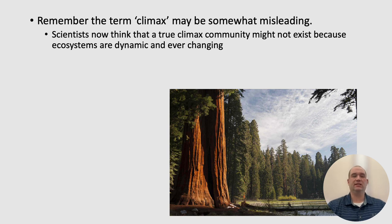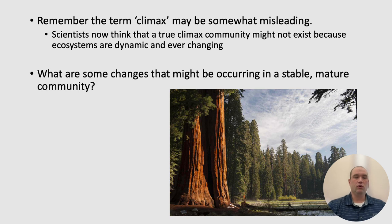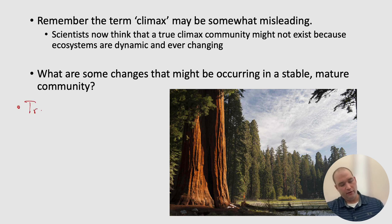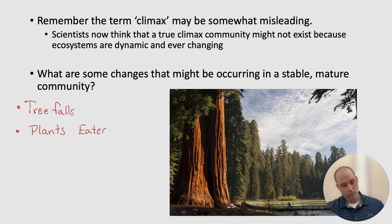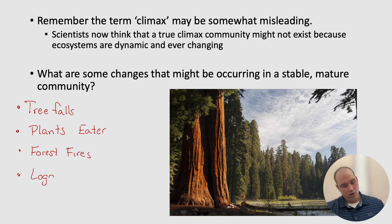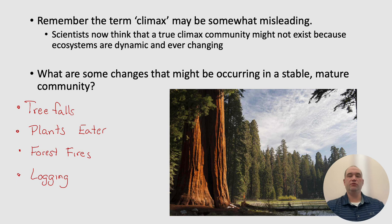The term 'climax' may be somewhat misleading. Scientists now think that a true climax community may not exist because ecosystems are dynamic and ever-changing. Some changes that might occur in a stable, mature community include trees falling, which creates new spaces for organisms; plants getting eaten; forest fires; and logging. All of these are examples of how an ecosystem can slightly change and continue to be dynamic.